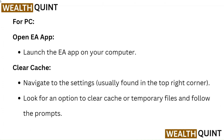For PC, open the EA App and launch it on your computer. To clear the cache, navigate to the settings — usually found in the top right corner — and look for an option to clear cache or temporary files and follow the prompts.